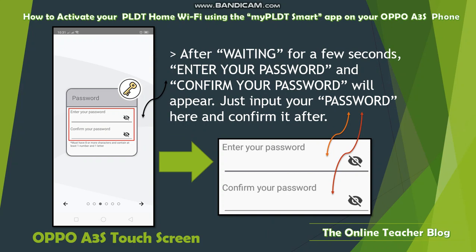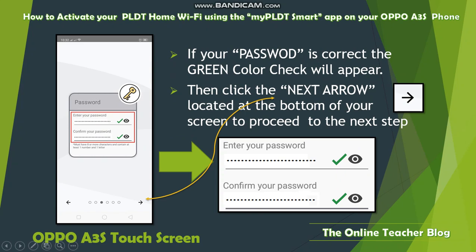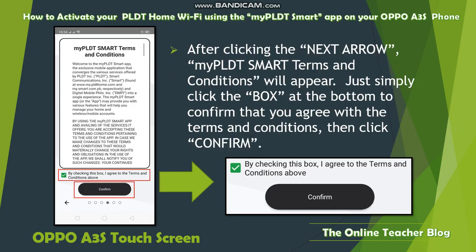After waiting, an 'Enter Your Password' and 'Confirm Your Password' field will appear. Enter your password and confirm it. Make sure you enter the same password so it is confirmed correctly. If your password is correct, a green checkmark will appear. Then click the next arrow at the bottom of your screen to proceed.